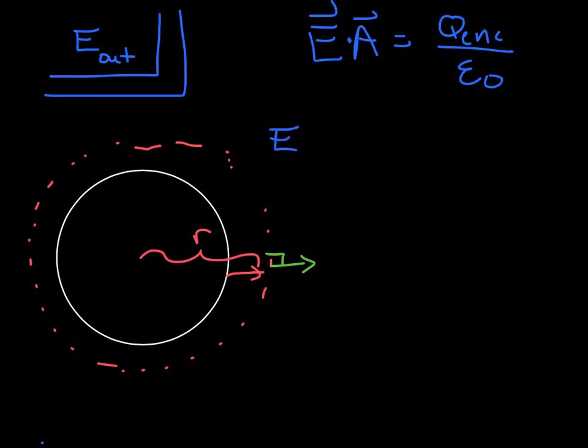This is going to be the area of our shape, which is a sphere. The area of a sphere is 4 pi r squared. Now this q enclosed, what are we enclosing? Well, we're enclosing the entire sphere. So this is just our q total over epsilon naught.